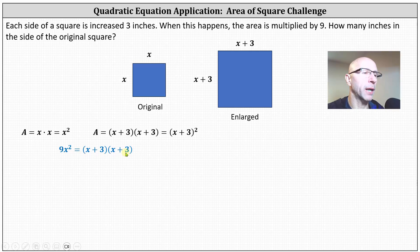For the first step, we'll multiply out the right side. Multiplying x plus three times x plus three, we have x squared plus three x plus three x plus nine. Combining like terms, we have nine x squared equals x squared plus six x plus nine.